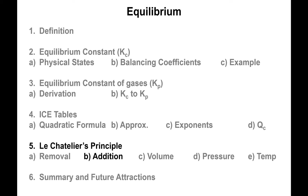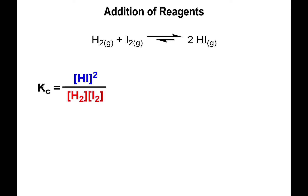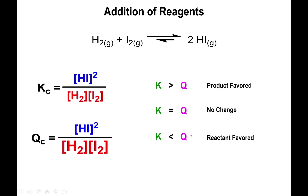Similarly, you could increase the amount of either reactants or products. If you add more reactants, the denominator becomes larger than it should have been. Increasing the denominator makes the overall fraction smaller, so Q ends up smaller than K, and the reaction shifts to the product side. Notice the difference from removal: when you add something, you shift to the opposite side of where the addition took place — adding reactants shifts to the product side.